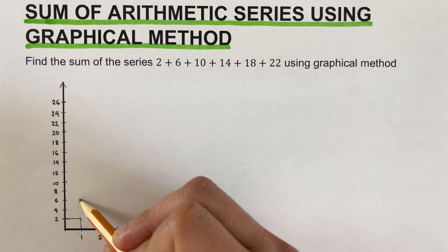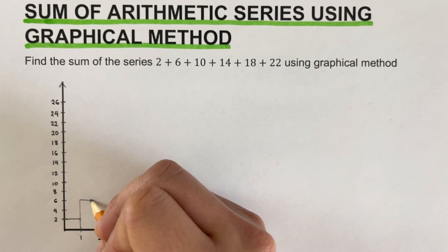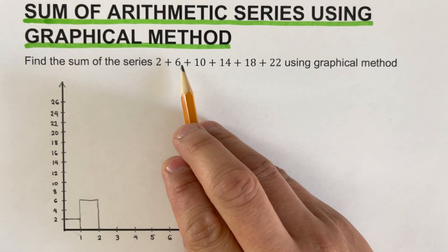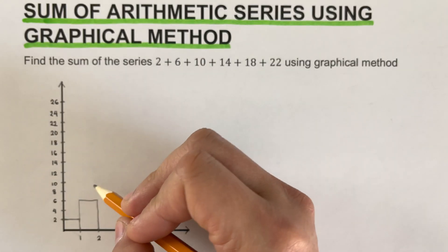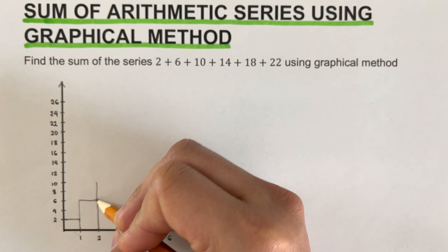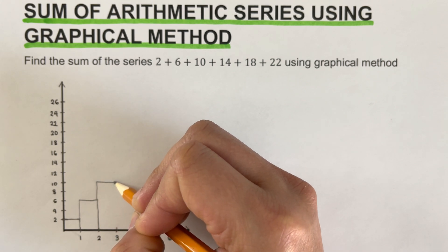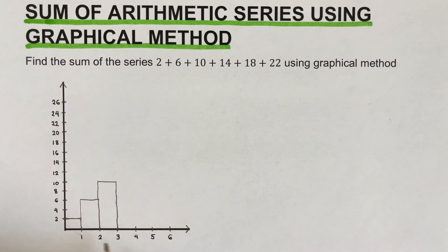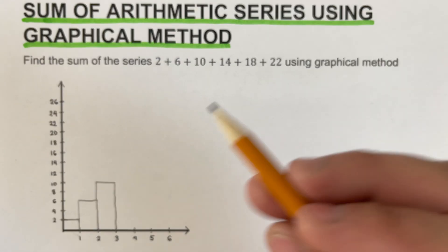The second term is 6, so we draw another rectangle representing 6. Then 10, going all the way up to 10 on the third position on the x-axis. We do the same thing for 14, 18, and 22.